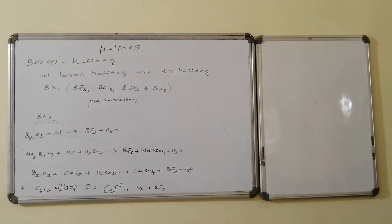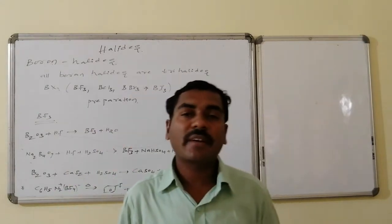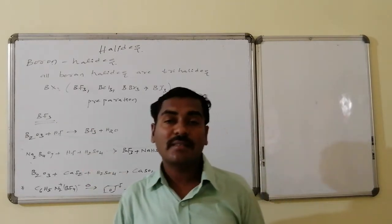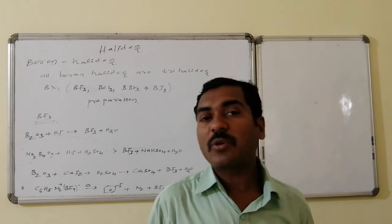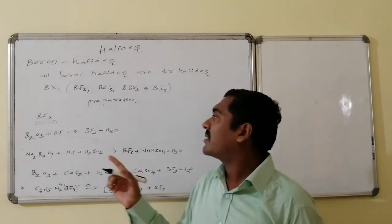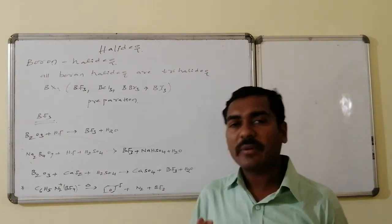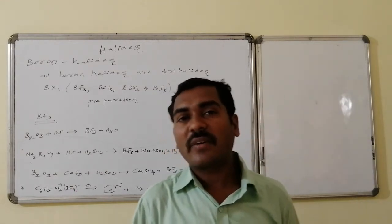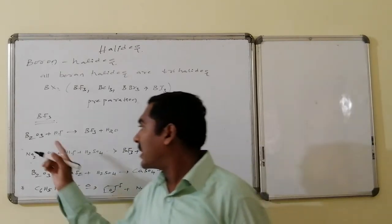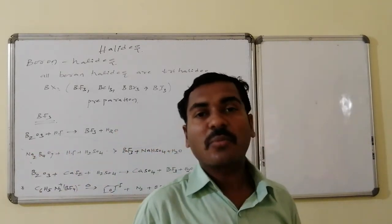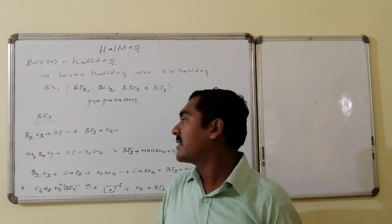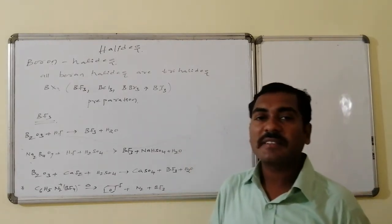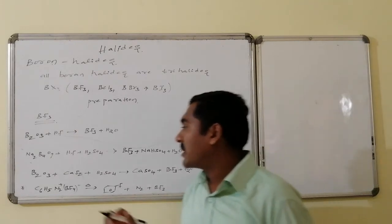All boron halides are trihalides; we never find any monohalide. The general formula is BX₃ — boron trifluoride, boron trichloride, boron tribromide, and boron triiodide. The most important one is boron trifluoride. BF₃ can be prepared from boron oxide reacting with hydrogen fluoride: fluoride is more electronegative and boron is more electropositive, so their combination forms boron trifluoride and water. There is no change in oxidation number, making it a non-redox reaction.